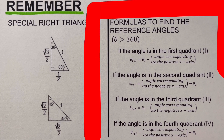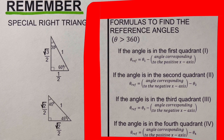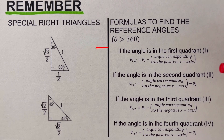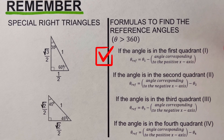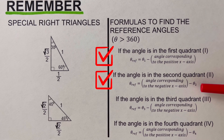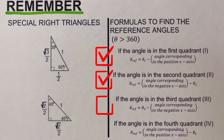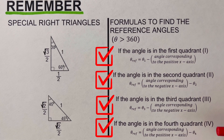These are the formulas to find the reference angle. Please remember that this formula works if our angle is more than 360 degrees. On the first quadrant, use the given angle minus 360. On the second quadrant, use 540 minus the given angle. For the third quadrant, use the given angle minus 540. For the fourth quadrant, use 720 minus the given angle.